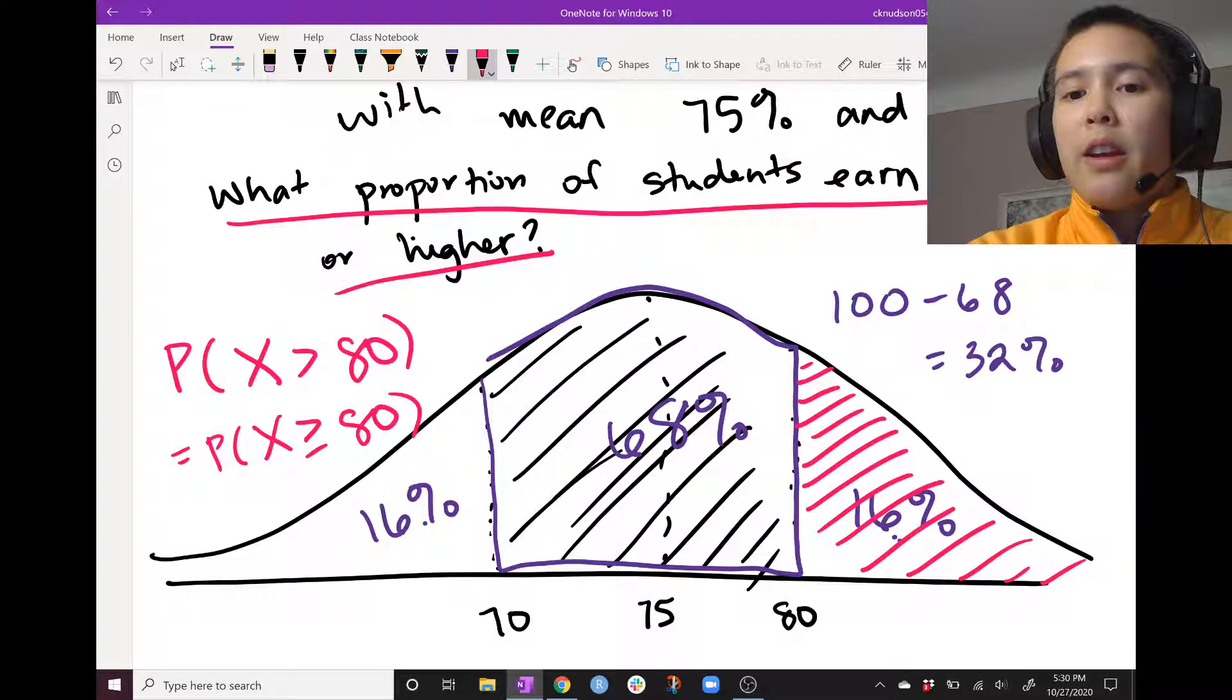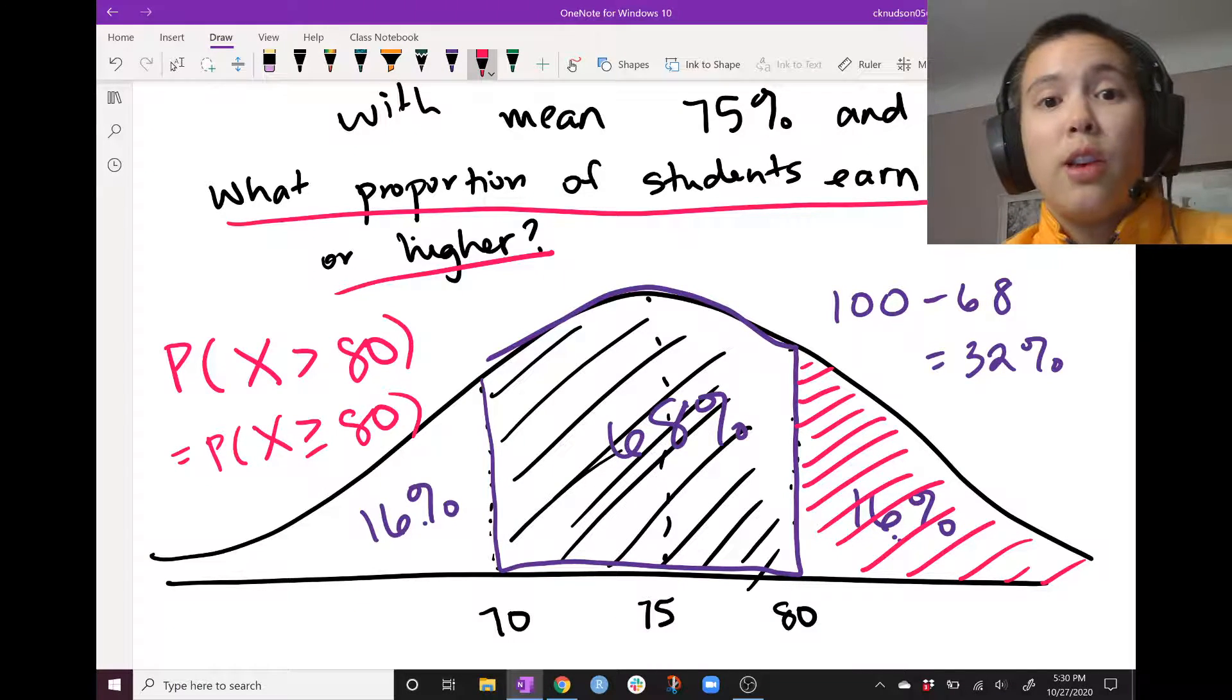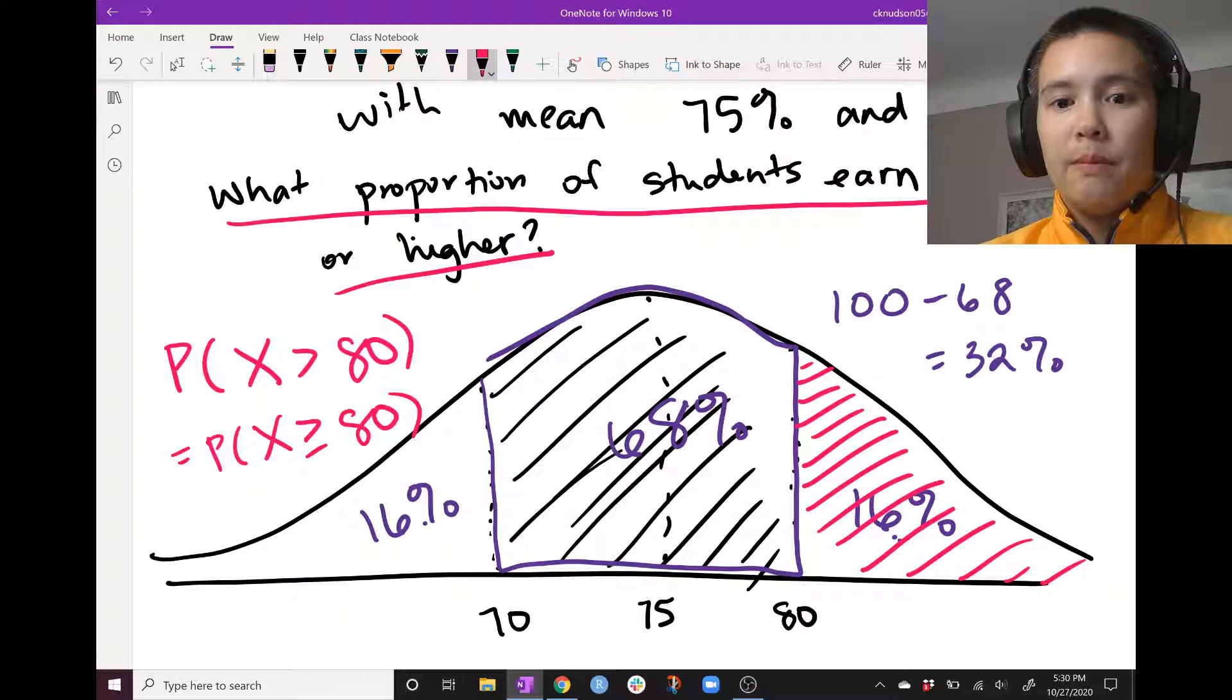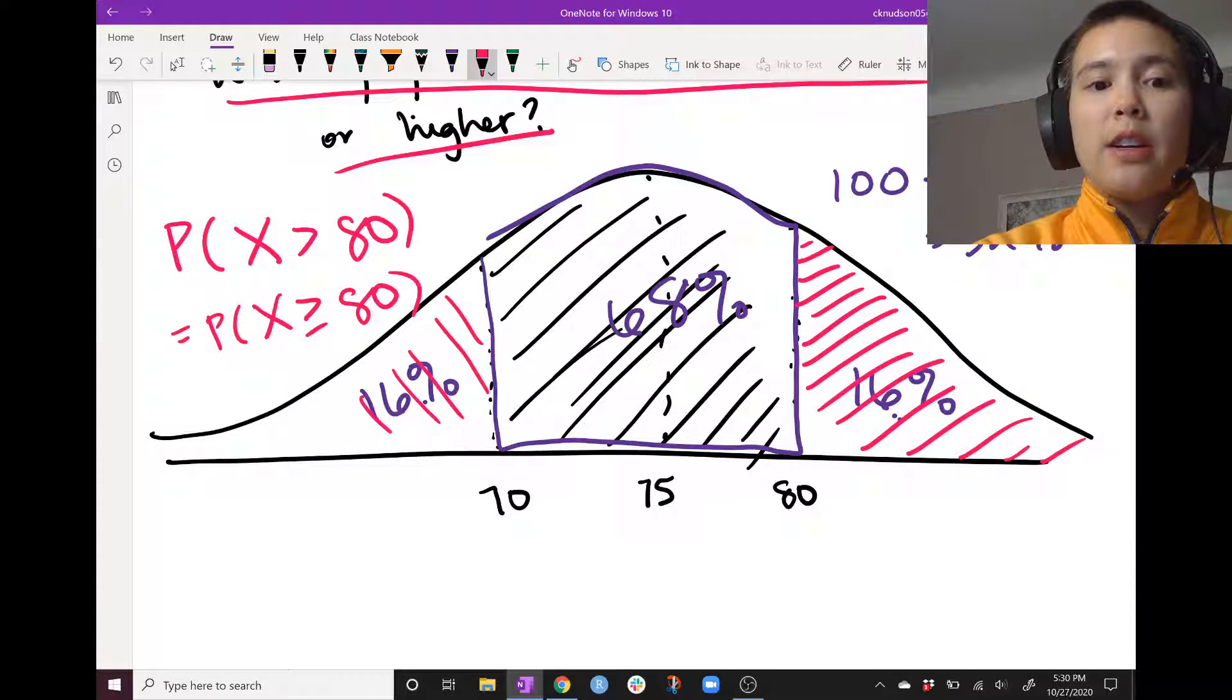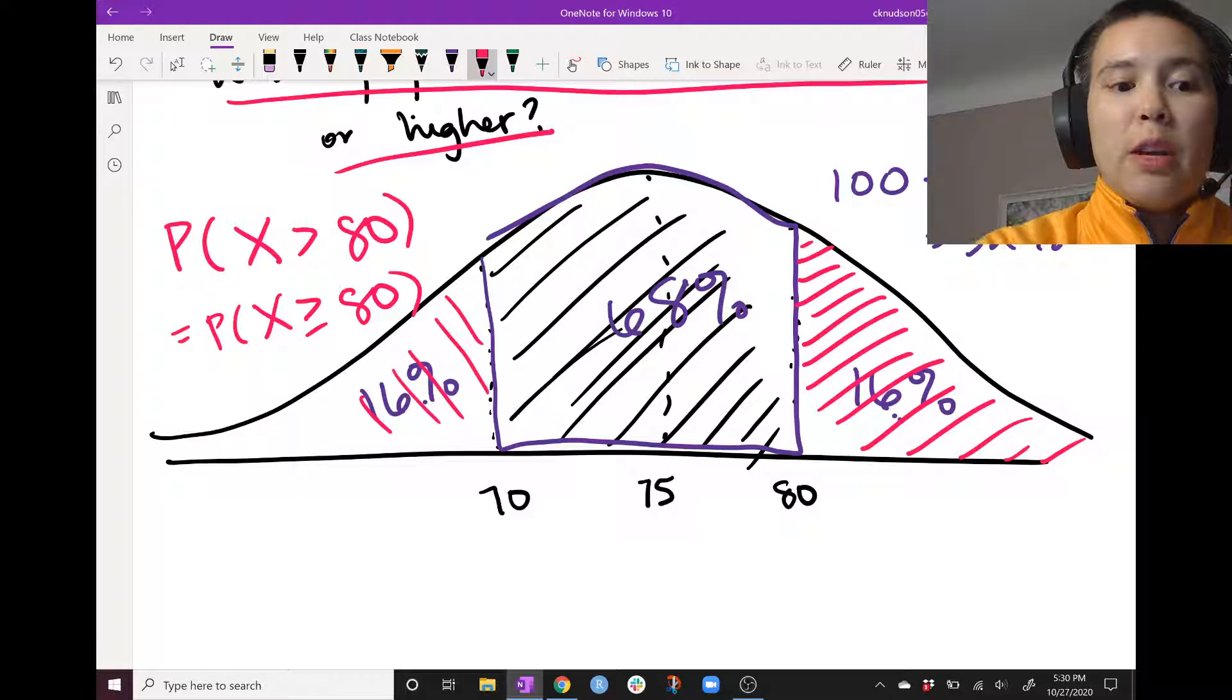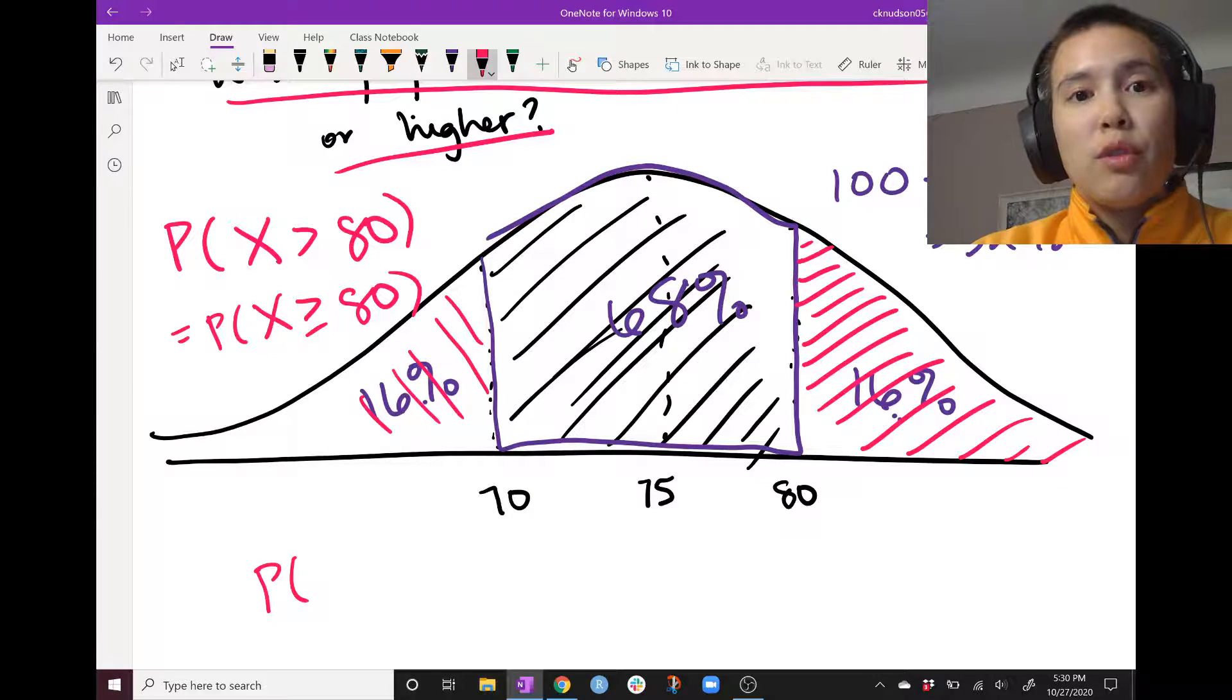So this pink area is exactly what we're looking for, 16%. So we have found that 16% of students earn 80% or higher. Similarly, because this down here is 16%, then we know that 16% of students earn 70% or lower.